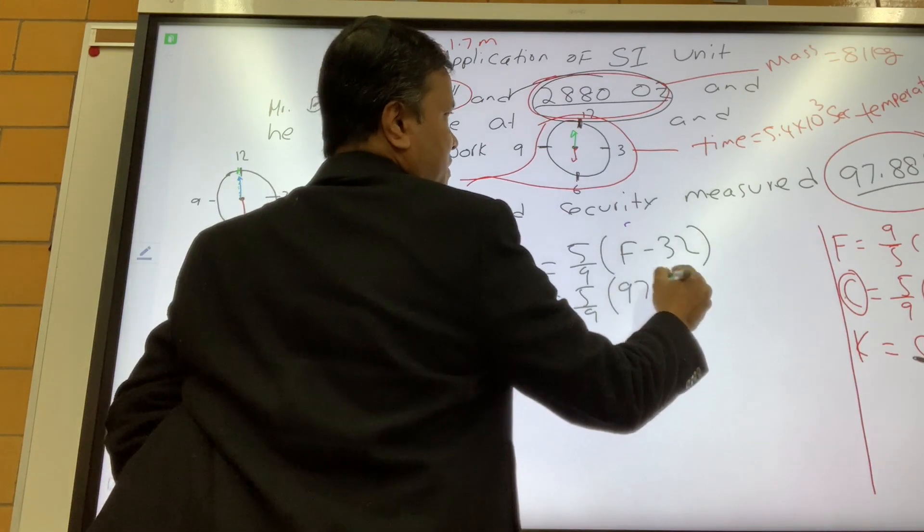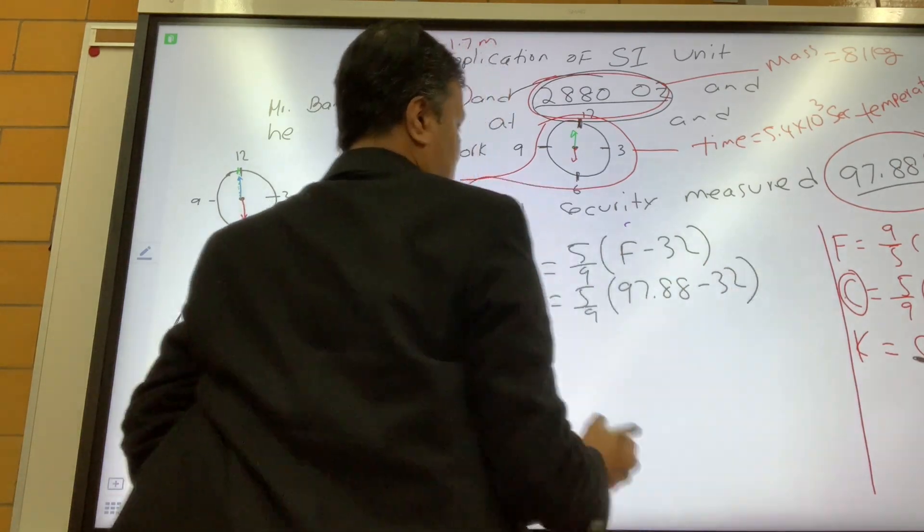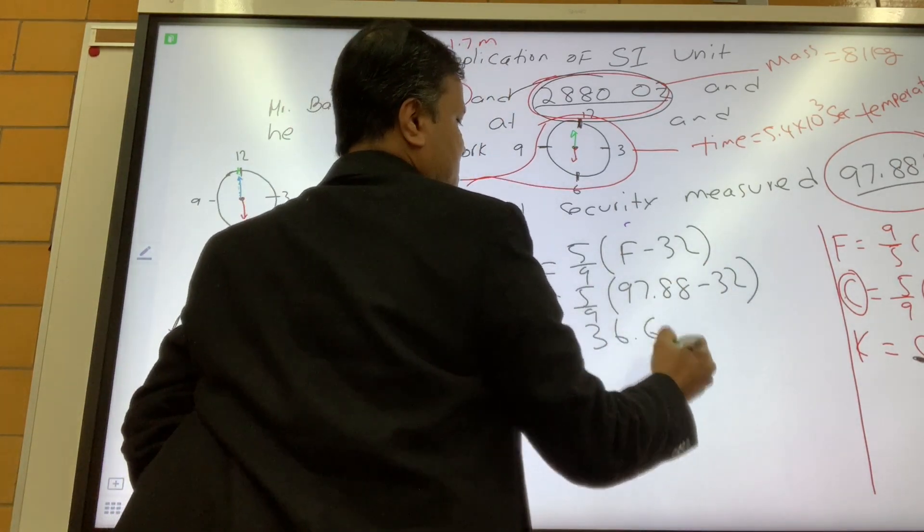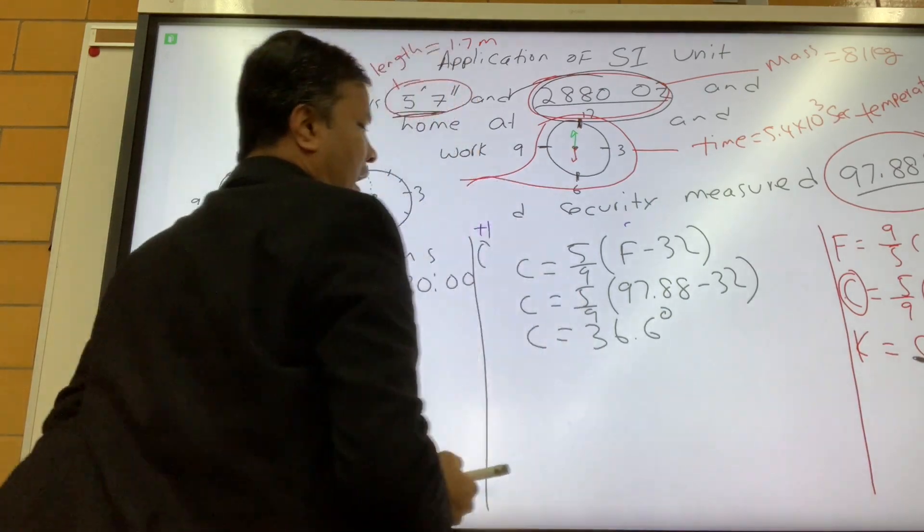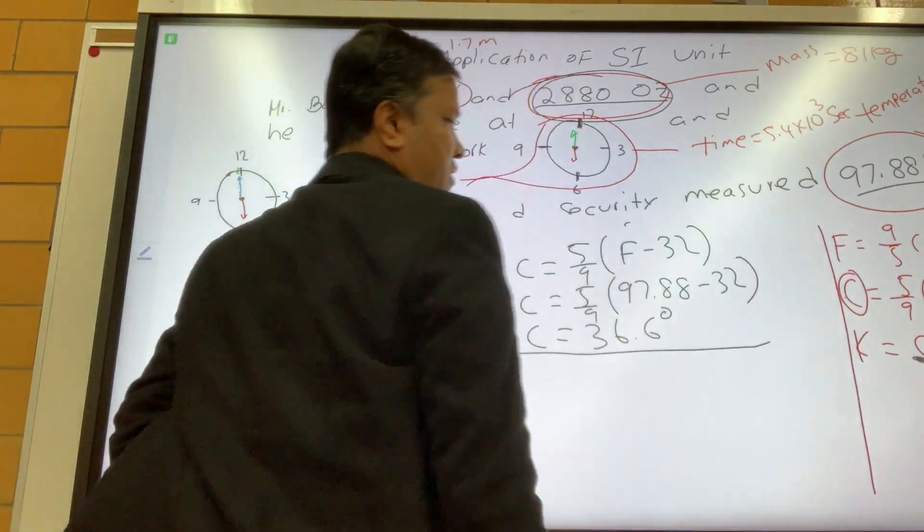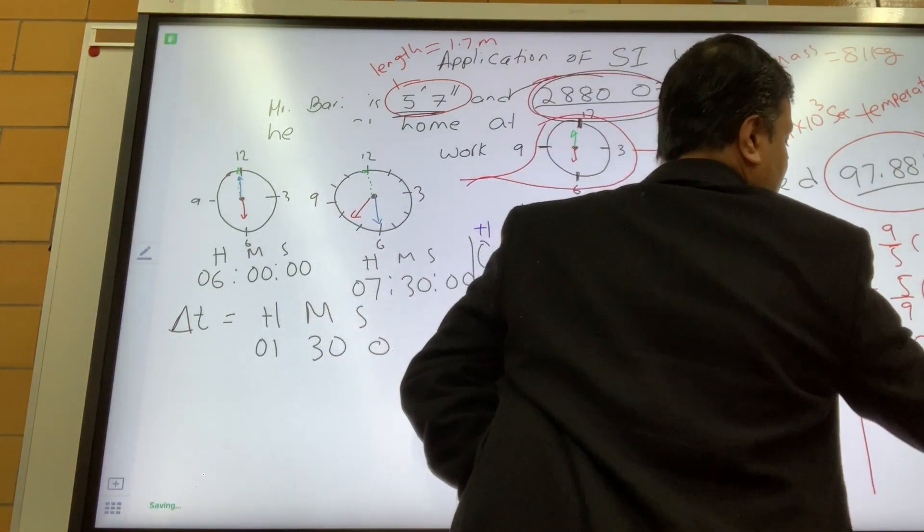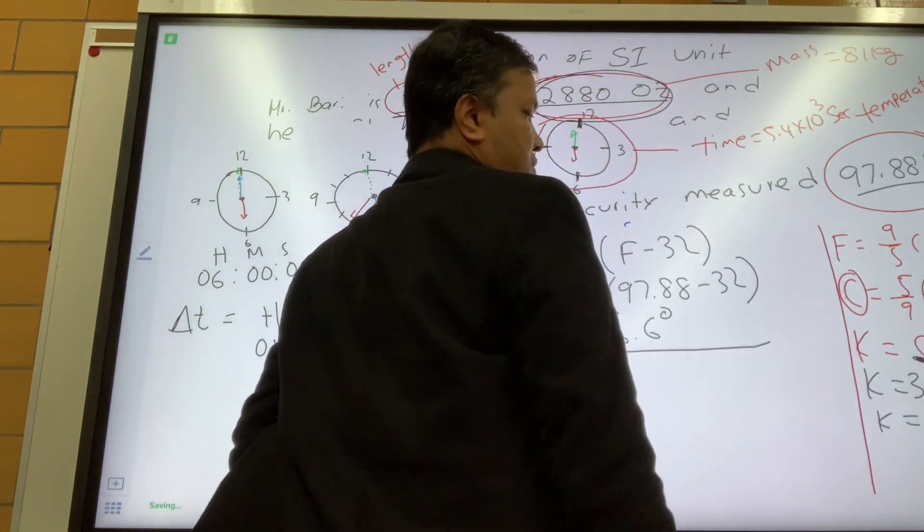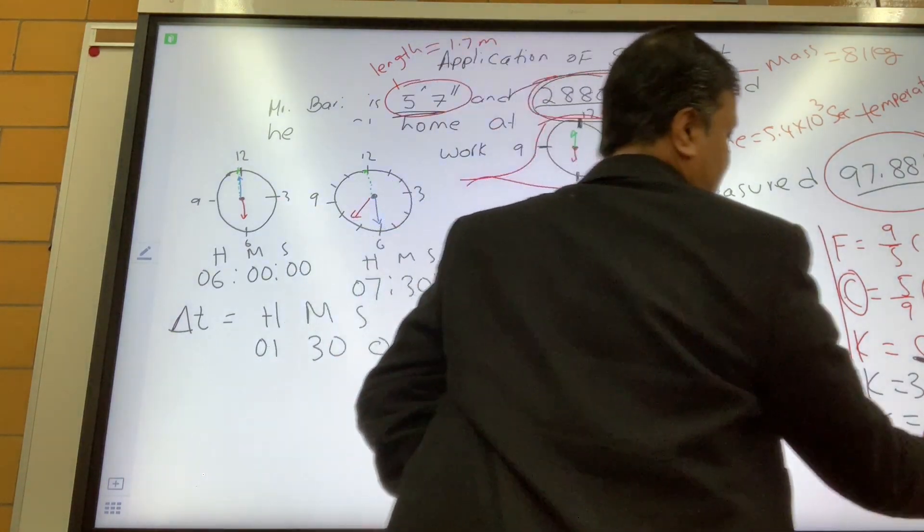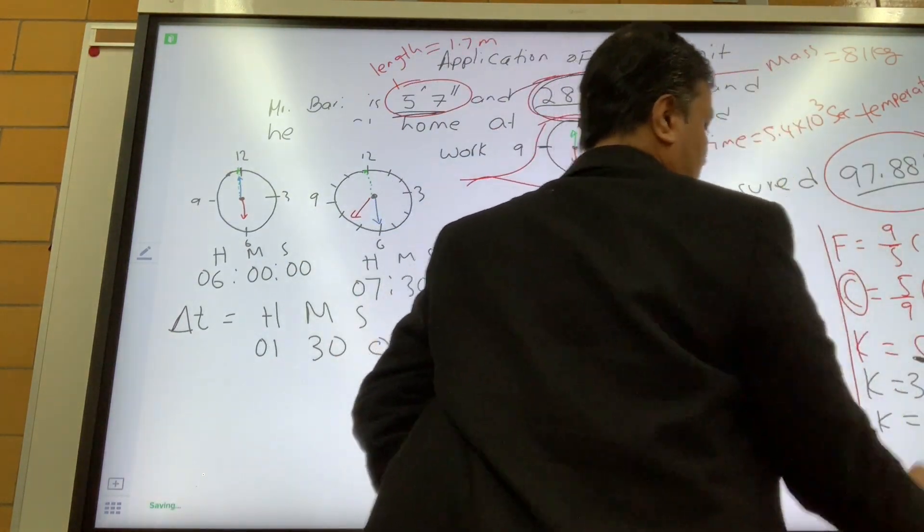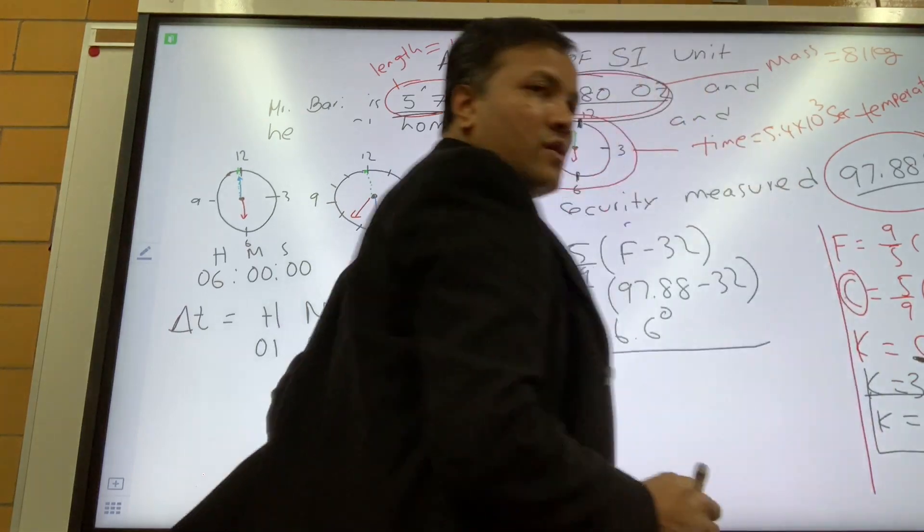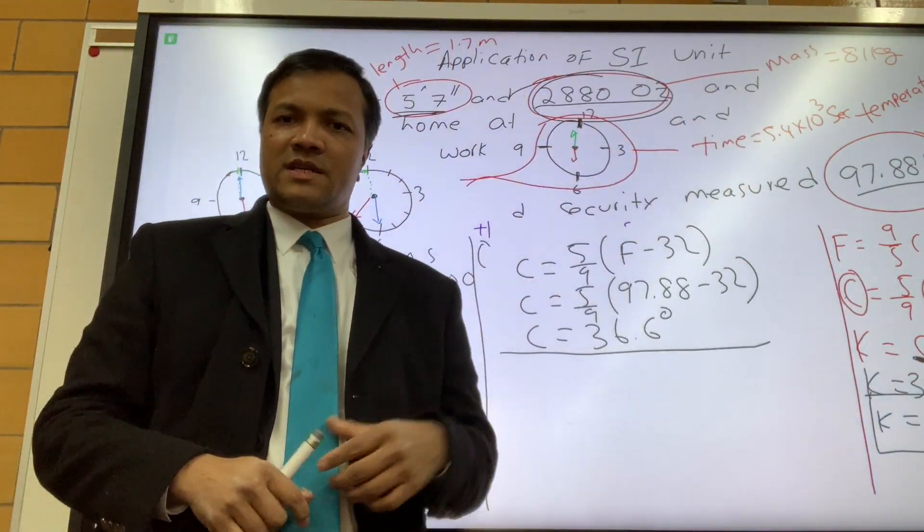So Celsius is 5 over 9, F minus 32. So 5 over 9, F is 97.88 minus 32. So now Celsius is 36.6. So now we're going to plug it into the Kelvin.